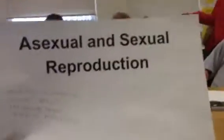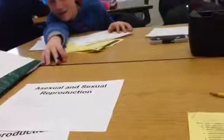Asexual and sexual reproduction — both produce offspring, both have at least one parent. It's a type of reproduction and creates new cells. And that is our video on sexual and asexual reproduction.